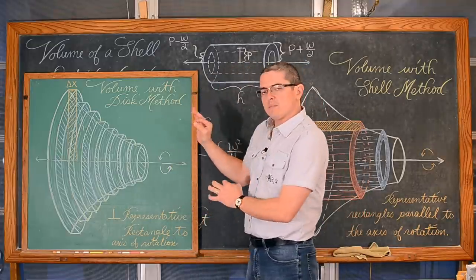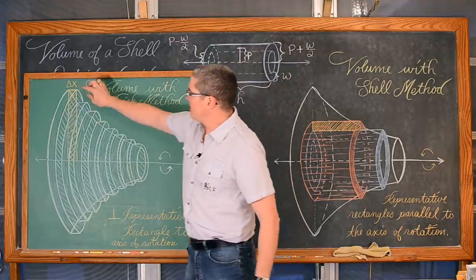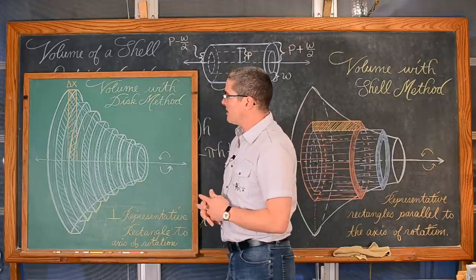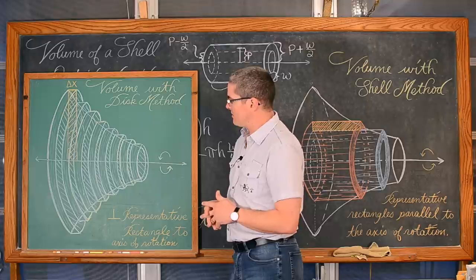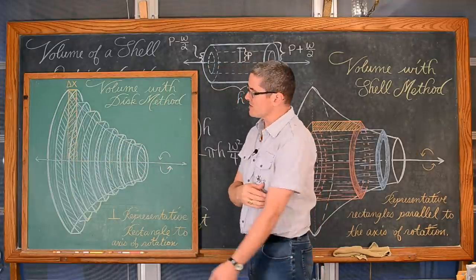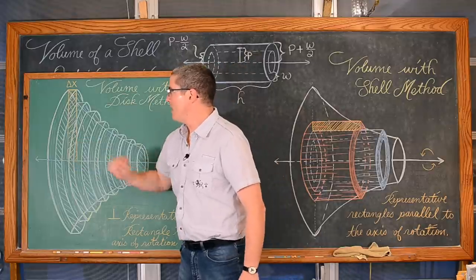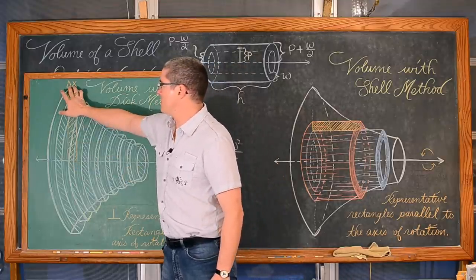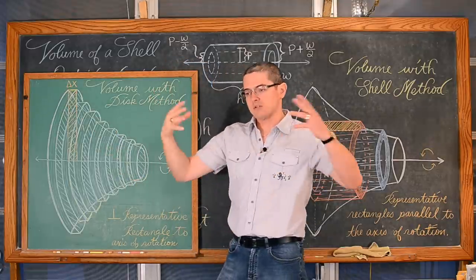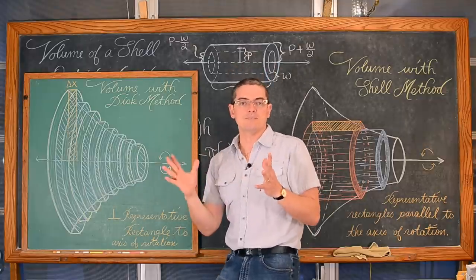Now one thing to pay attention to, now that we are going to start the comparison, is when you are finding volumes of revolution using the disk method, the representative rectangle that is rotated — which creates these disks that we use to estimate the volume — is always going to be perpendicular to the axis of symmetry. So if we have a horizontal axis of symmetry, we have a vertical representative rectangle and thus we are going to be integrating with respect to x, letting the widths of those rectangles approach zero, giving us an infinite number of disks.